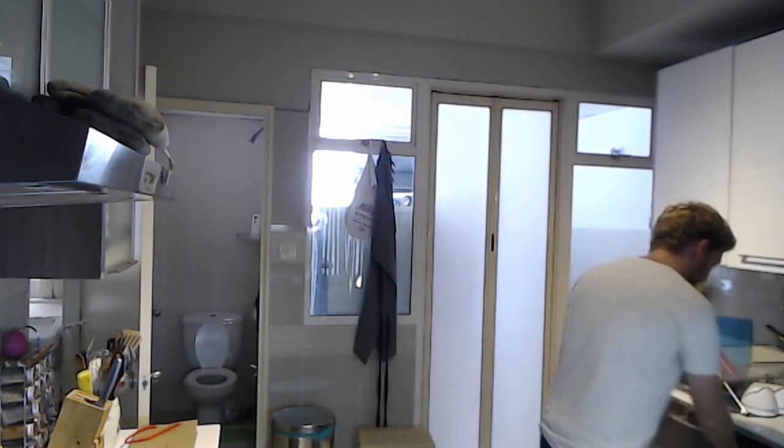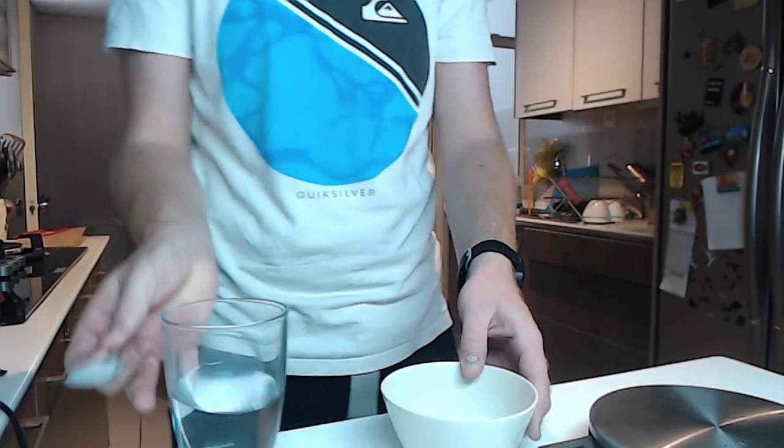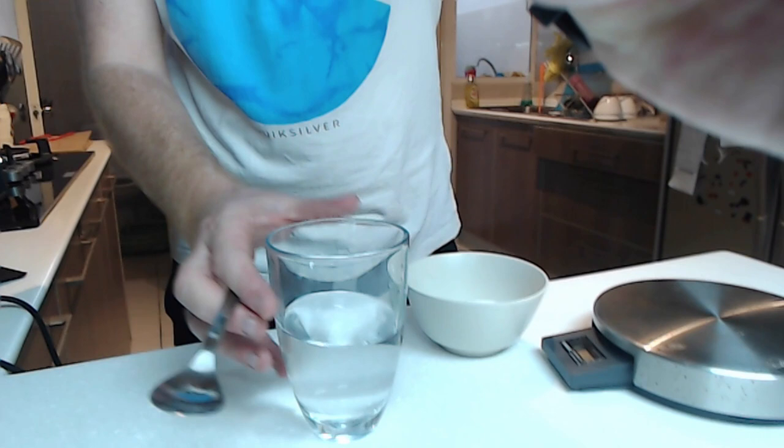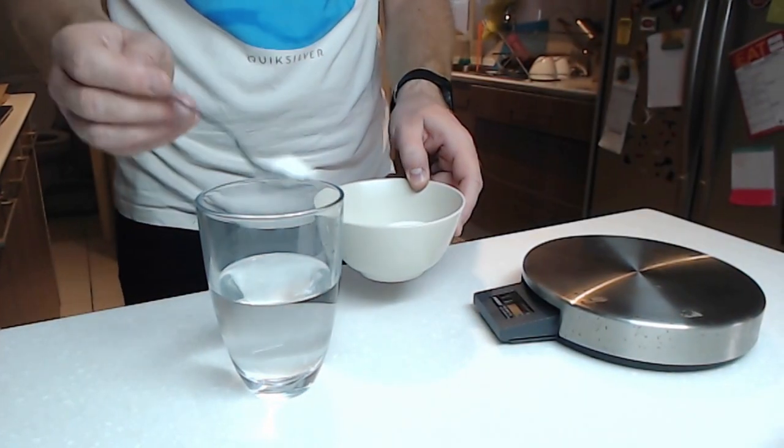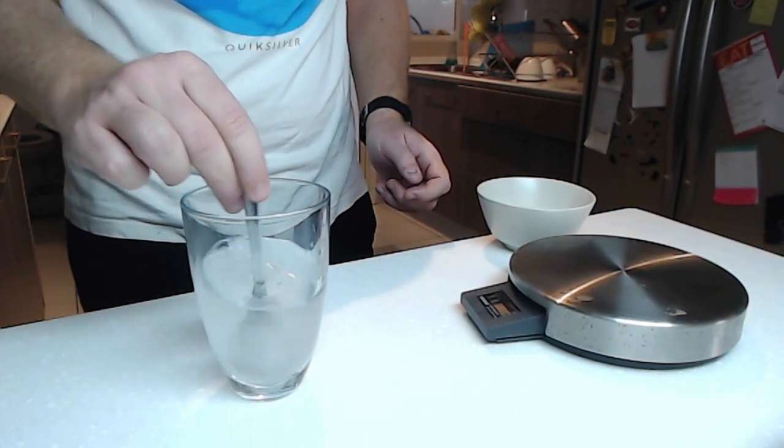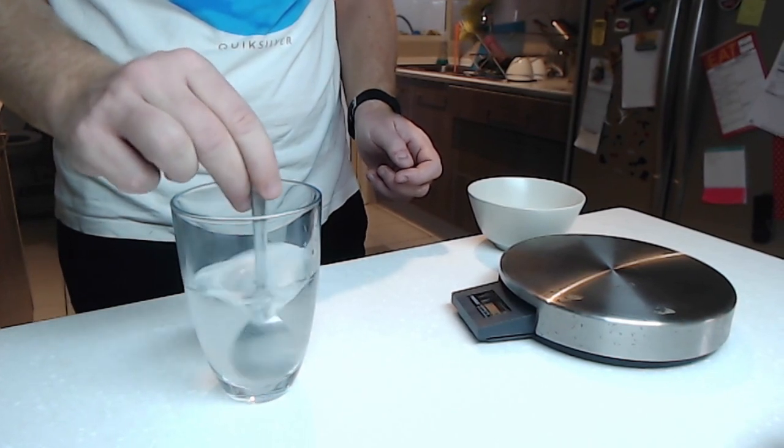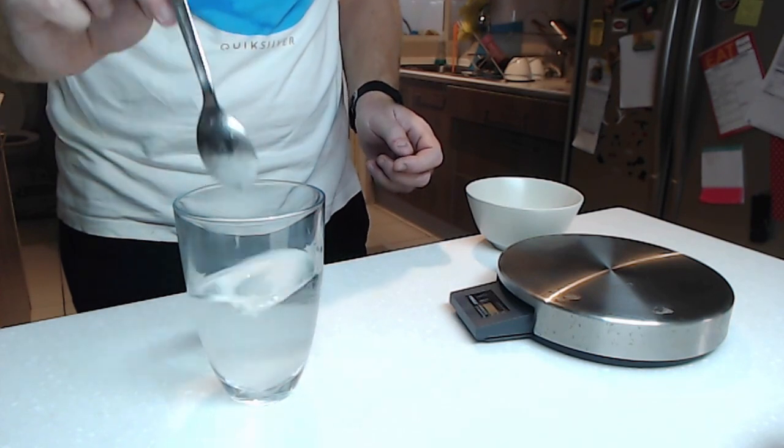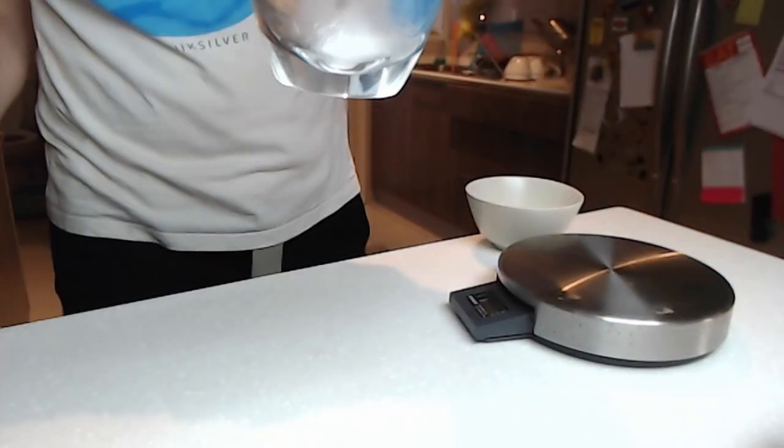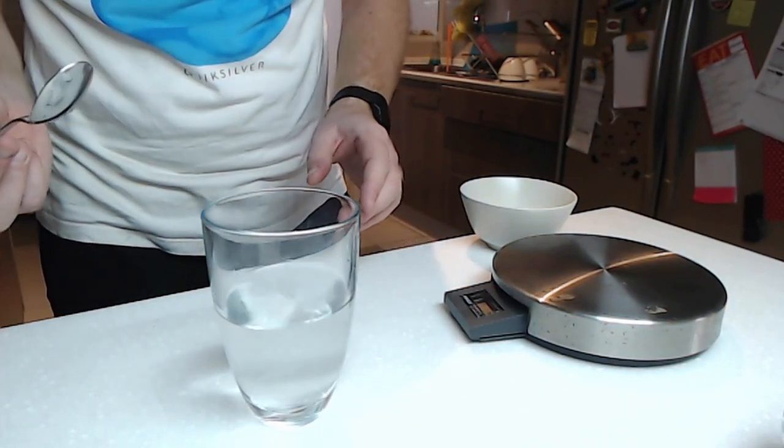I'll just grab a spoon. Let's move the camera where you can see what's happening. So I'm going to put a spoonful of sugar straight into my water, like this, and you can see it's gone kind of cloudy. But if I give it a stir, and wait a few seconds, and keep stirring, you can see that I can't see the sugar anymore.